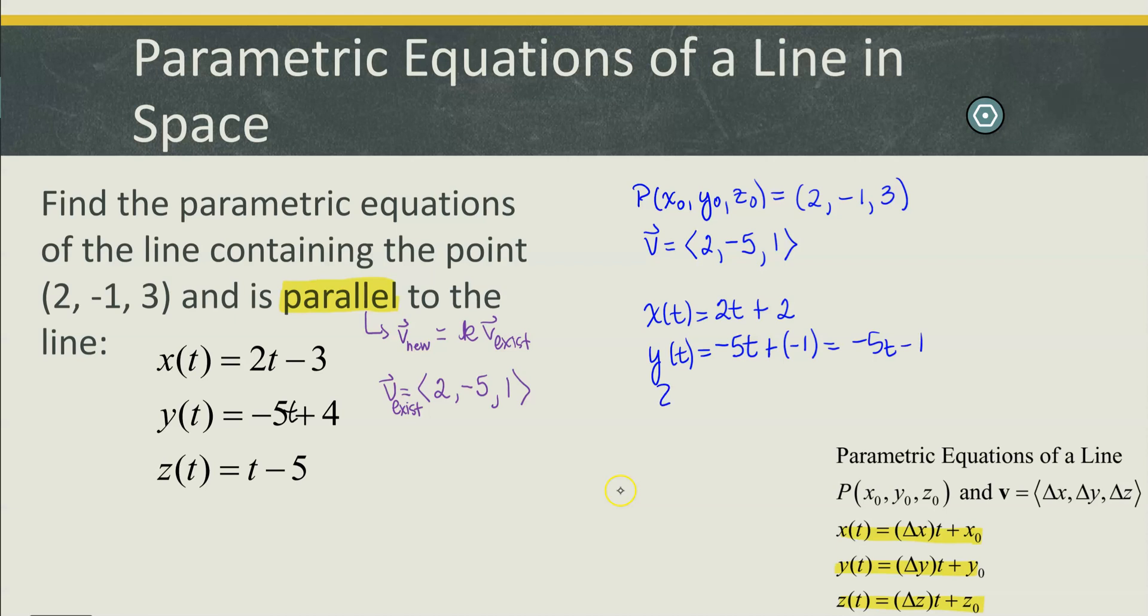And then my z equation is going to be my change in z from my direction vector, so 1 times t plus the z coordinate from my point, which is 3. So our parametric equations for the line requested here are x of t equals 2t plus 2, y of t equals negative 5t minus 1, and z of t equals t plus 3. I hope you find this helpful.